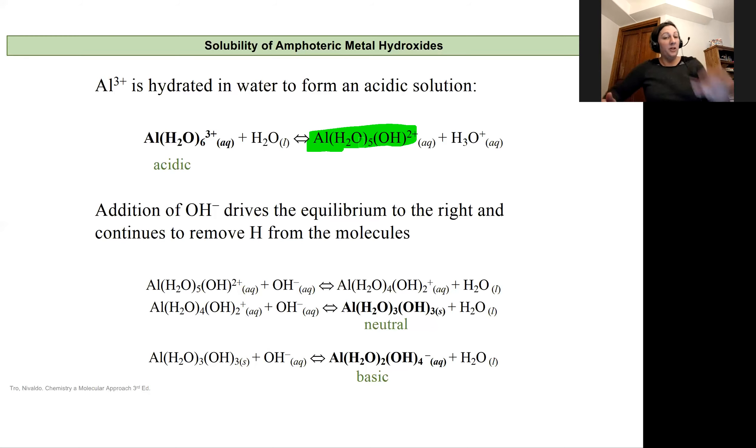We know this already about aluminum from looking at acidic salts. If we add hydroxide ions to this solution, we're actually going to drive the equilibrium to the right because as we add hydroxide, we're going to be decreasing our concentration of hydronium ions.